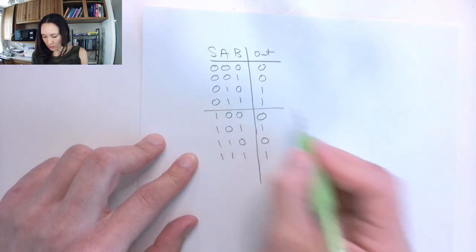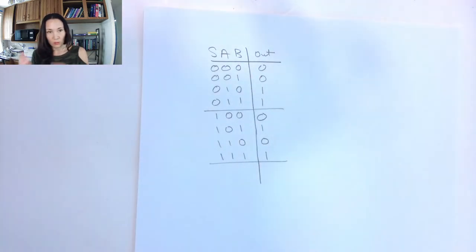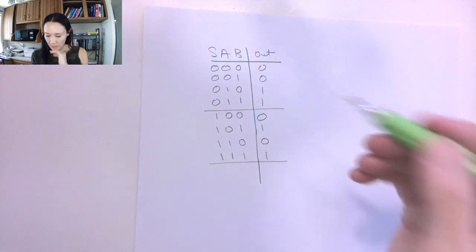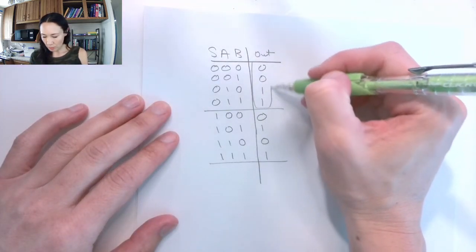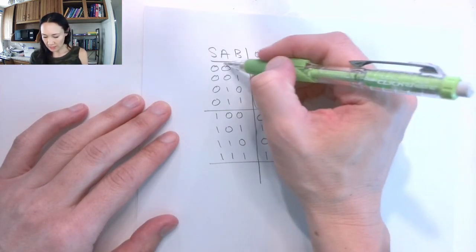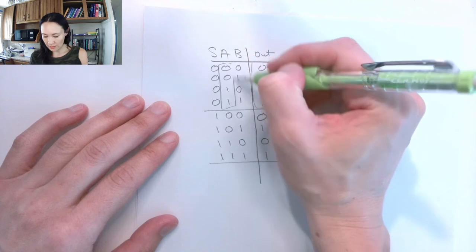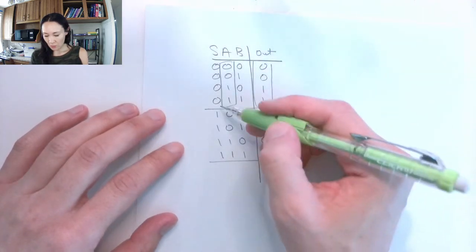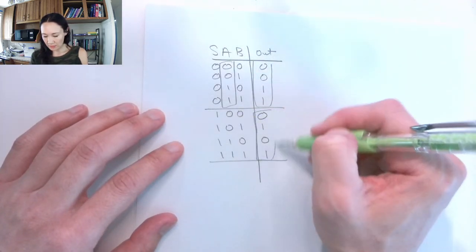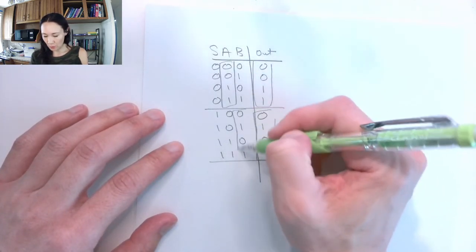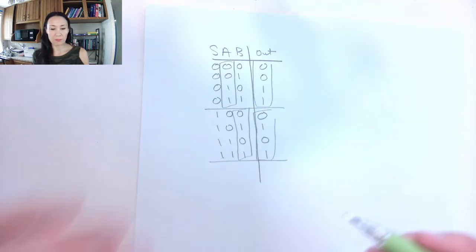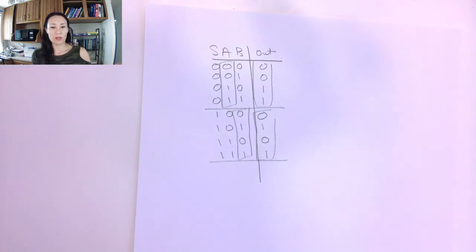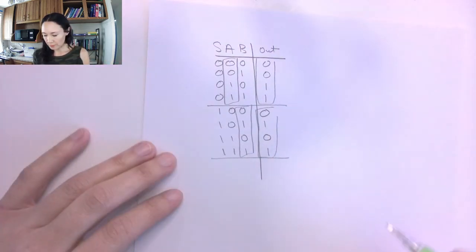If you look at these two regions on the truth table: when select is 0, the output column looks identical to what's on a; and when select is 1, the output column looks identical to what's coming in on b. So that's the 2-to-1 multiplexer.